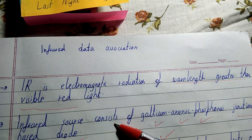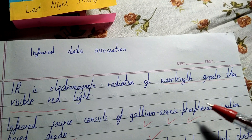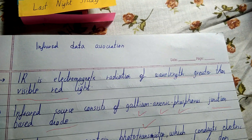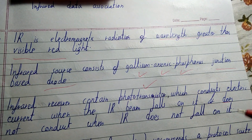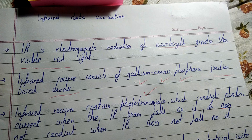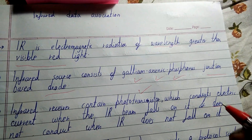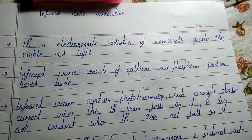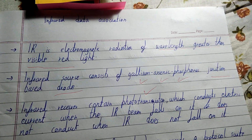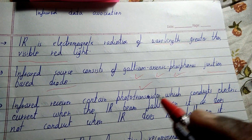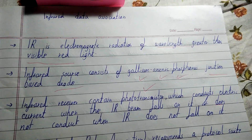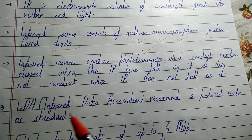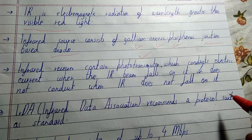Infrared sources consist of gallium arsenic phosphorus — these three combined in a junction diode can be a source of infrared. The infrared receiver contains a phototransistor which conducts electric current whenever the IR beam falls on it. When the infrared receiver gets the infrared radiation beam, it conducts electric current, and does not conduct electric current when IR does not fall on it.